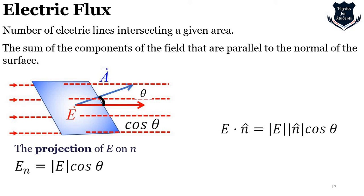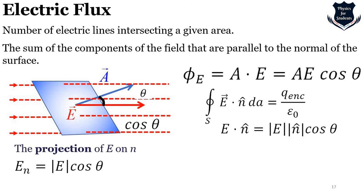The electric flux φ_E equals A · E = A cos θ. Since n̂ is a unit vector (magnitude equals one), it simplifies accordingly. This is why the dot product is used: it takes two vectors — the area vector A and the electric field E — and returns a scalar value representing the flux through the surface.